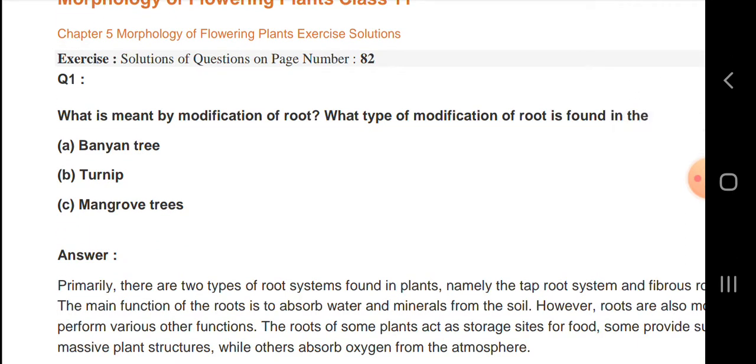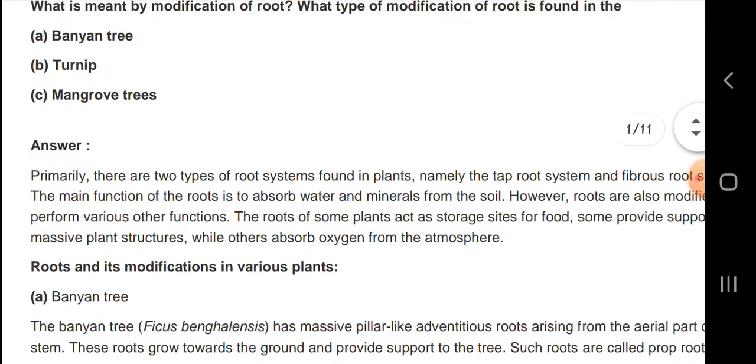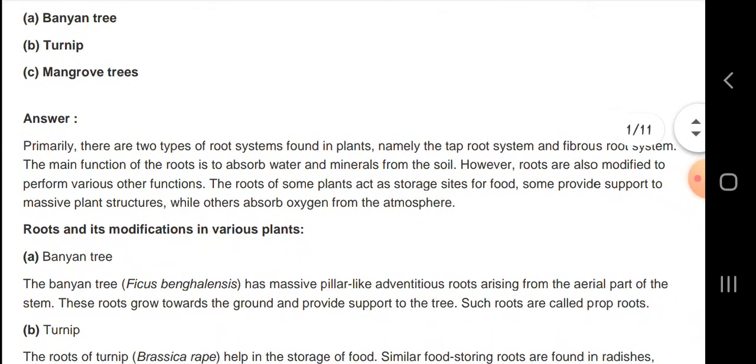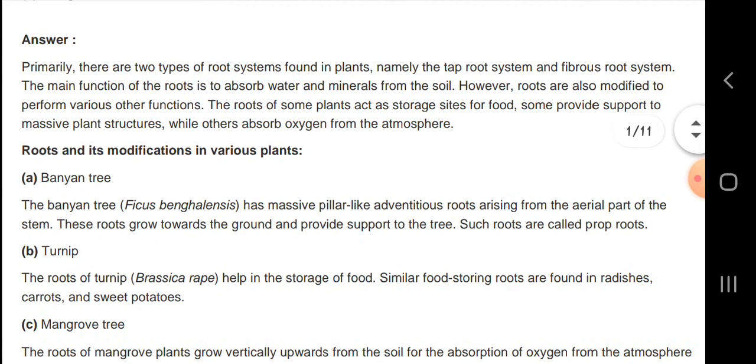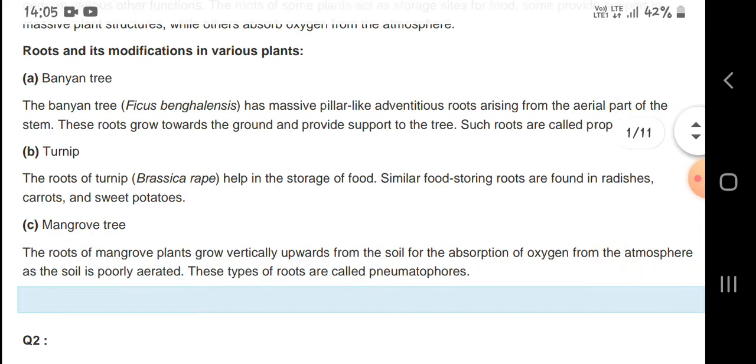What is meant by the modification of root and what type of modification of root is found in the banyan tree, turnip, and other things? Primarily there are two types of root systems found in plants, namely the tap root and the fibrous root system. The main function of the root is to absorb water and minerals from the soil. Banyan tree has massive pillar-like adventitious roots arising from the aerial part of the stem.